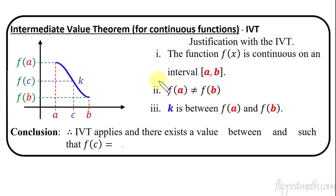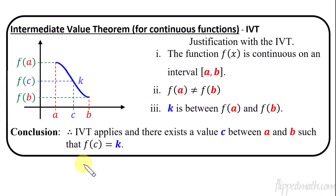So if these three conditions are met, then we can use the Intermediate Value Theorem and write the three little dots, which is a shorthand in mathematics for 'therefore.' Therefore, IVT — the Intermediate Value Theorem — applies. There exists a value c between a and b such that f(c) equals k. That's really confusing when you first read it, but practice this a little bit and it won't be too bad. Whenever you want to use the Intermediate Value Theorem, show these three justification points and write this conclusion statement.